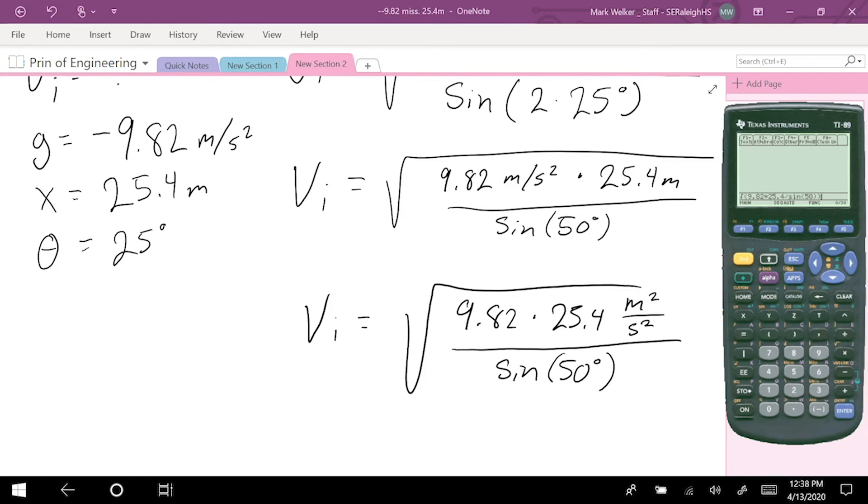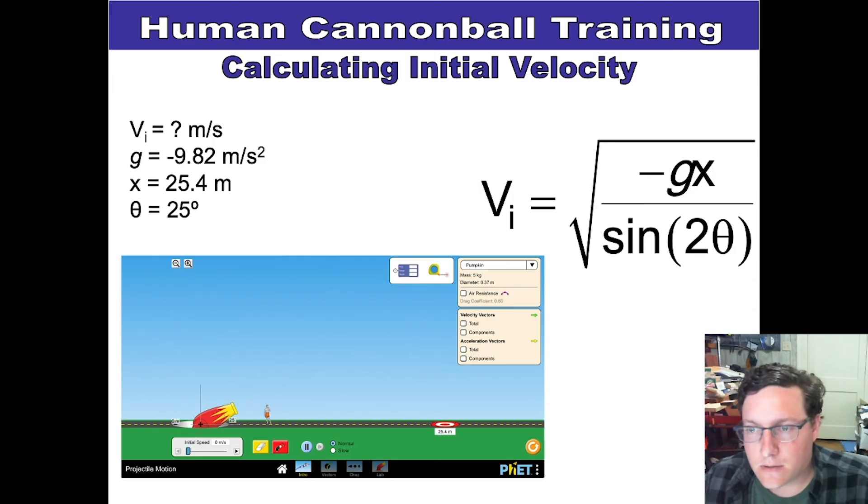Make sure all the parentheses are closed. Should be good. And we get an initial velocity of 18 meters per second, because the square root of meter squared over second squared, both of those get a square root, which means meter over second.